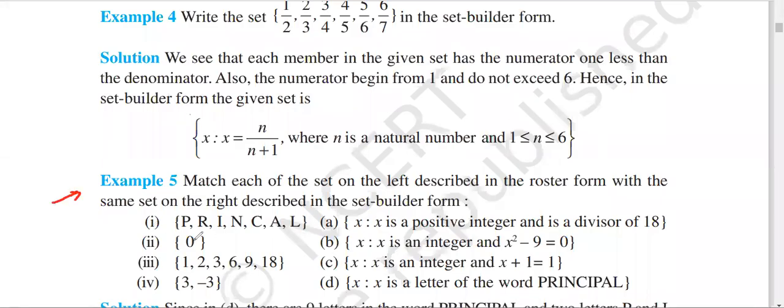In example 5, there are two tables in LHS and RHS to match both of them. The left is the roster form and the right side is the set-builder form.